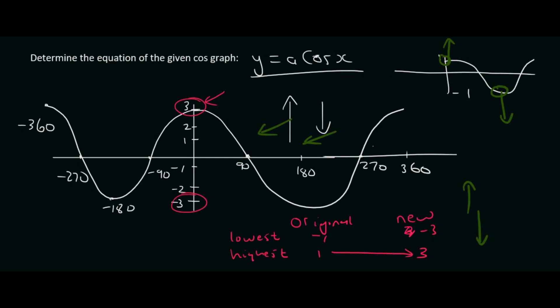So how do you get from there to there? Well, you multiply by 3 and if you multiply this one by 3, it also works. So they've clearly multiplied the whole graph by 3. So the answer will be y equals 3 cos x.